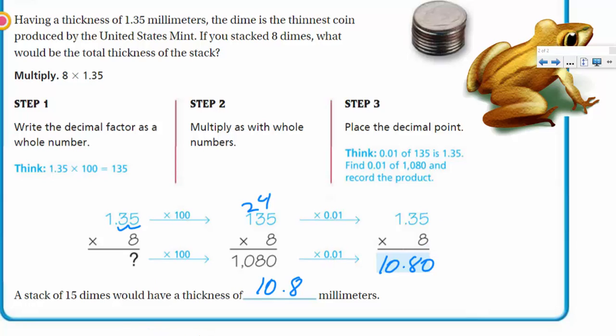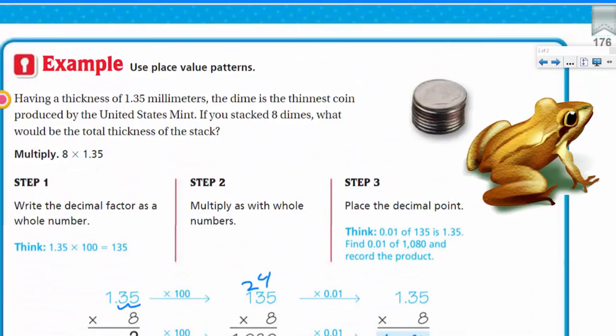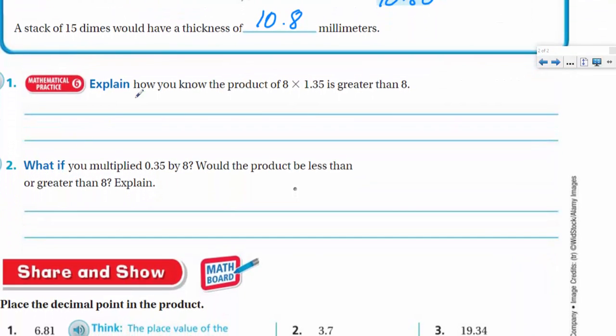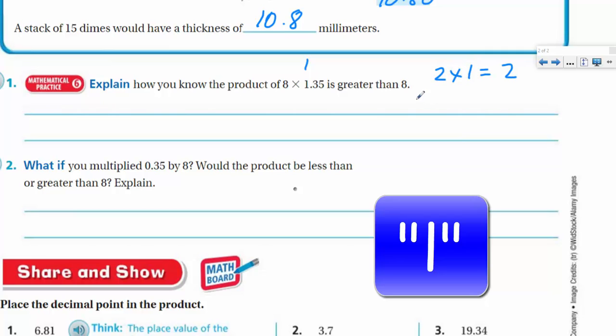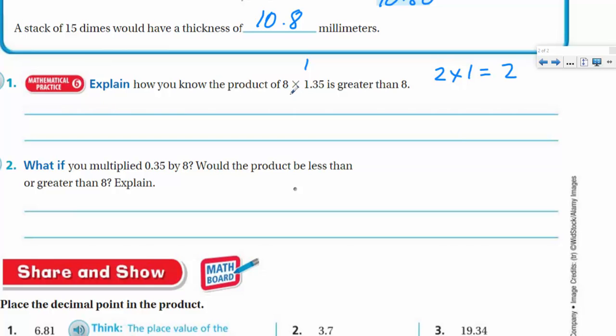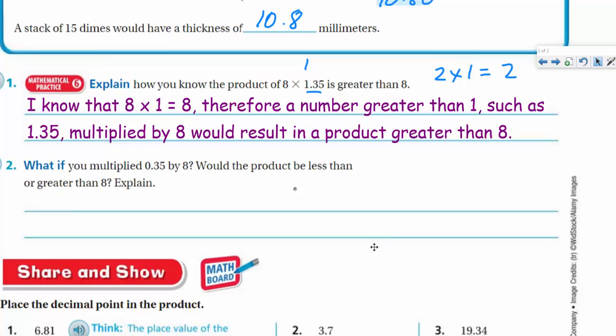All right. Explain how you know the product of 8 times 1.35 is greater than 8. I like this. I do like this. Okay. Because this means mathematical reasoning here. All right. Frog, should you just stay up there? Okay. You can just stay up there. He didn't want to come. He wants the money. So, I don't know. When I first think on the top of my head, you know, I'm thinking like this. One kind of a crucial number. One lets me know that if you're multiplying any number at all, just think about those simple ones. Whenever you multiply a number by 1, it becomes that same number. It's the number that's being multiplied by 1. So, we call this the identity property of multiplication. And this is true for any number. So, when I'm looking at this, I'm thinking, 8 times 1 is 8. So, a number that is greater than 1, and this number is greater than 1 because it has 35 hundredths on there as well, would mean that the product would be greater than 8.